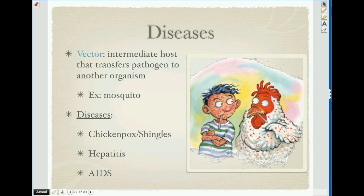Now let's talk about viral diseases. A vector is some sort of host that can transfer the pathogen to another organism. For example, a mosquito can hold viruses, and a mosquito is often considered the deadliest organism on the planet because it can carry so many diseases with it. All of the following are viral diseases.